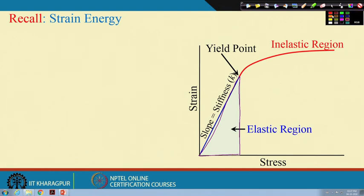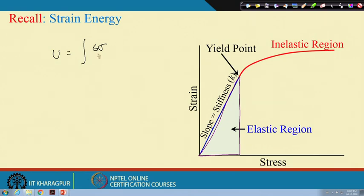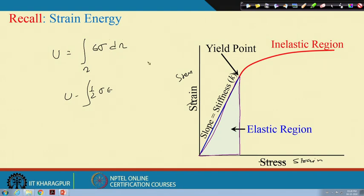If we write the internal strain energy U, it is: U = (1/2) ∫ σ · ε dΩ, integrated over the entire domain Ω. This gives the energy density, and integrating over the entire domain gives the total strain energy.